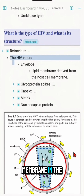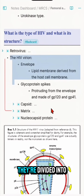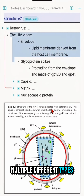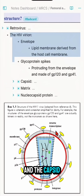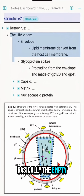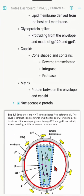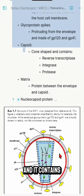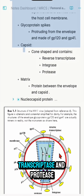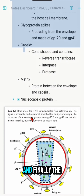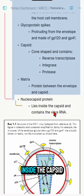The envelope is a lipid membrane like any other membrane in the body. The glycoprotein spikes divide into multiple types: glycoprotein 120 (gp120) and glycoprotein 41 (gp41). The matrix is the space between the white areas, and the capsid is a conical shape found inside the matrix.